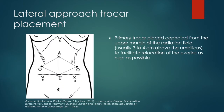In the lateral approach, the primary trocar must be placed cephalad from the upper margin of the radiation field, usually 3-4 cm above the umbilicus at the li-huang point, seen here at point A, to facilitate relocation of the ovaries as high as possible. The typical trocar placement includes the primary trocar at point A, a 10 mm trocar at the umbilicus at point U, and two 5 mm mid-abdominal lateral trocars designated by the O's, all configured in a diamond configuration.